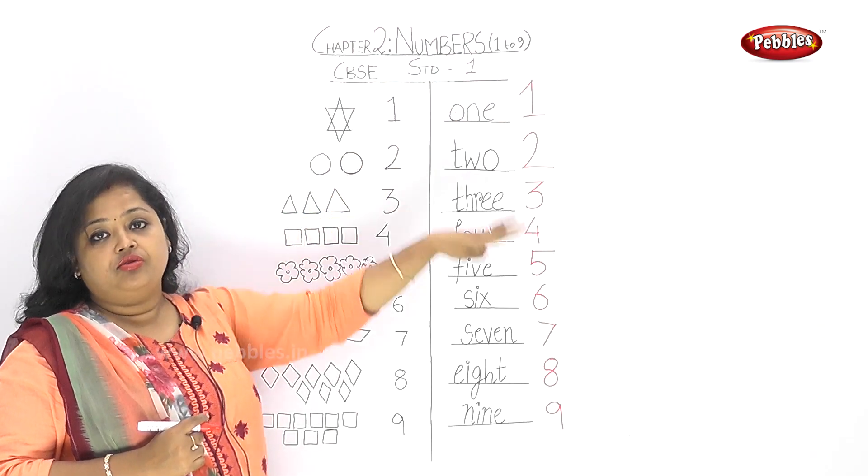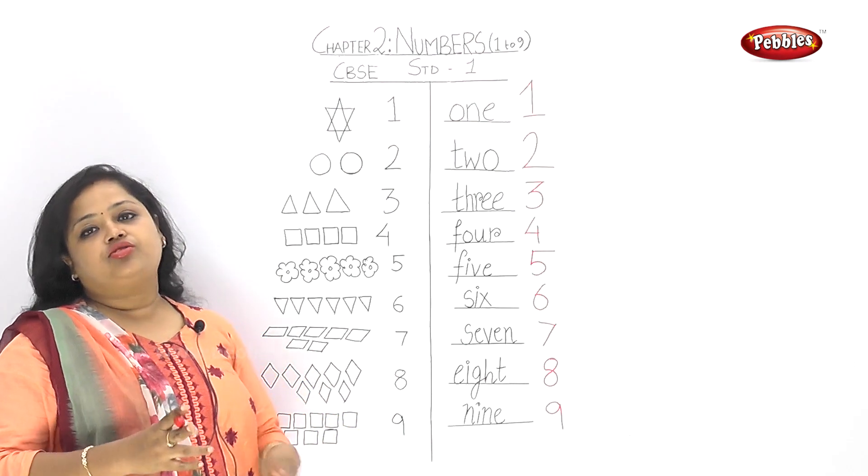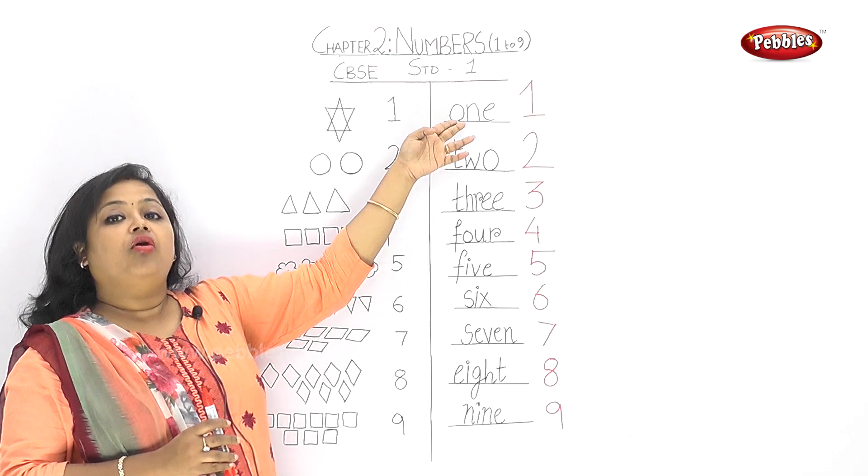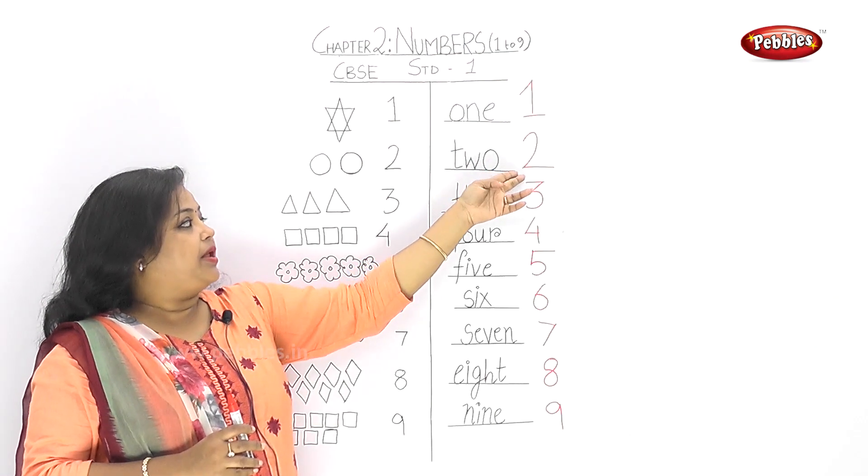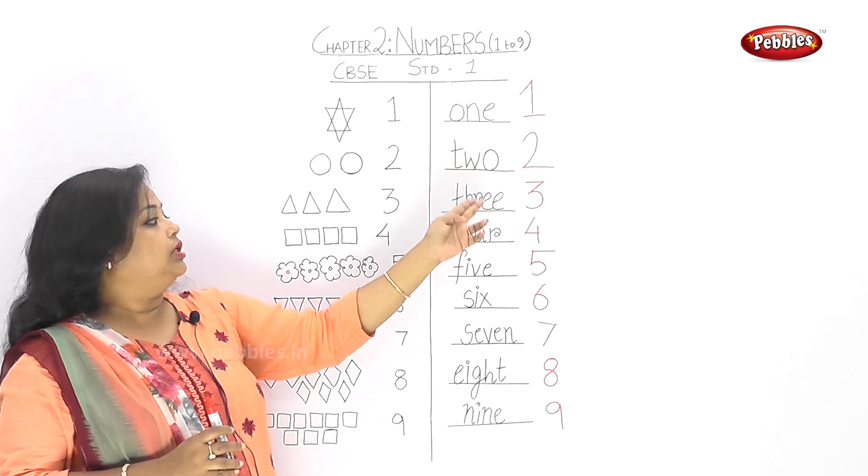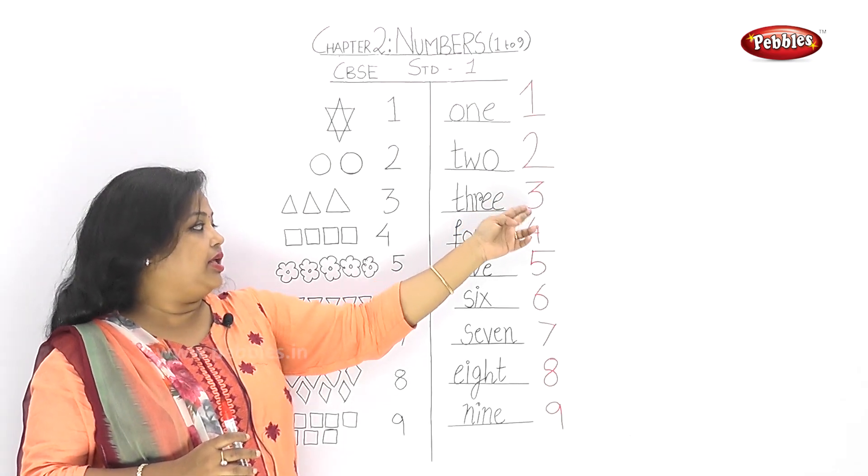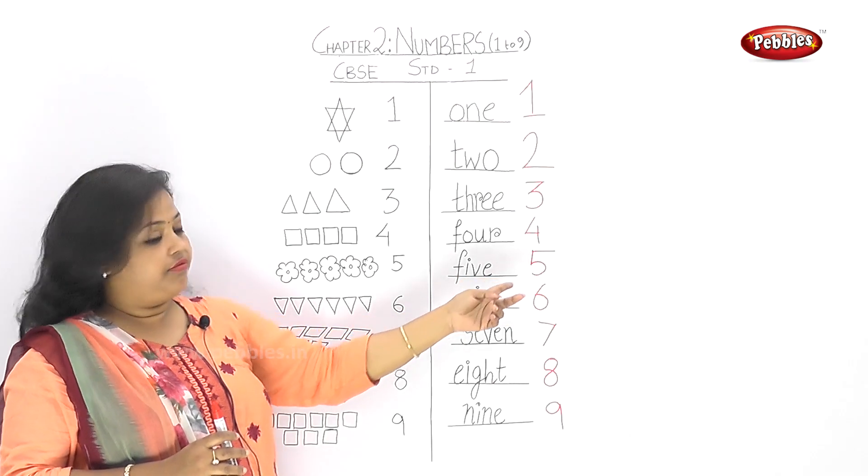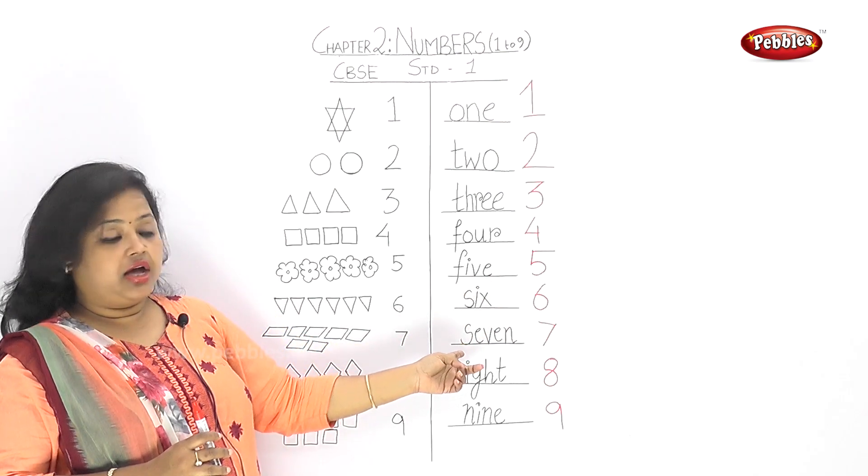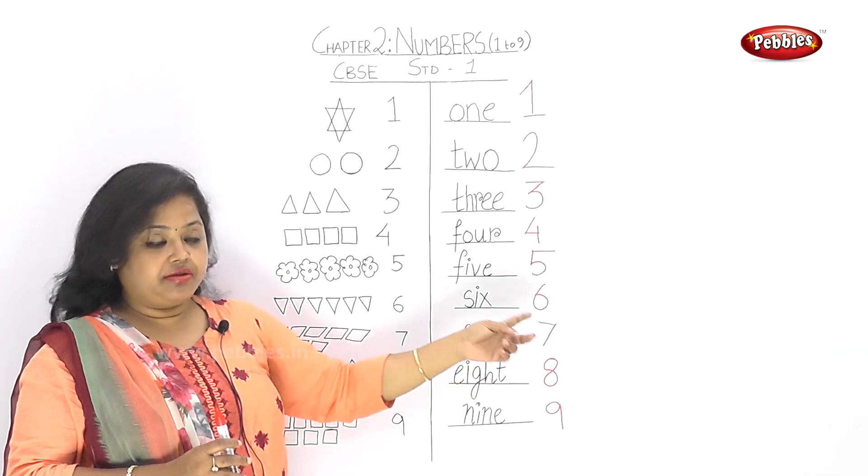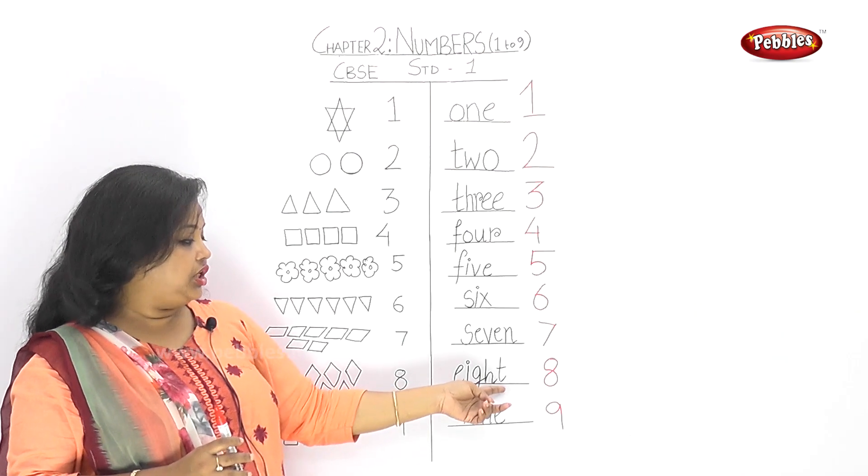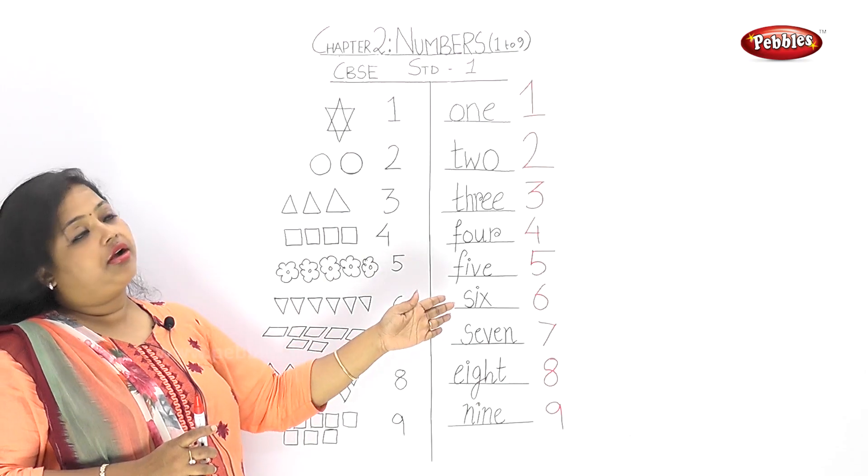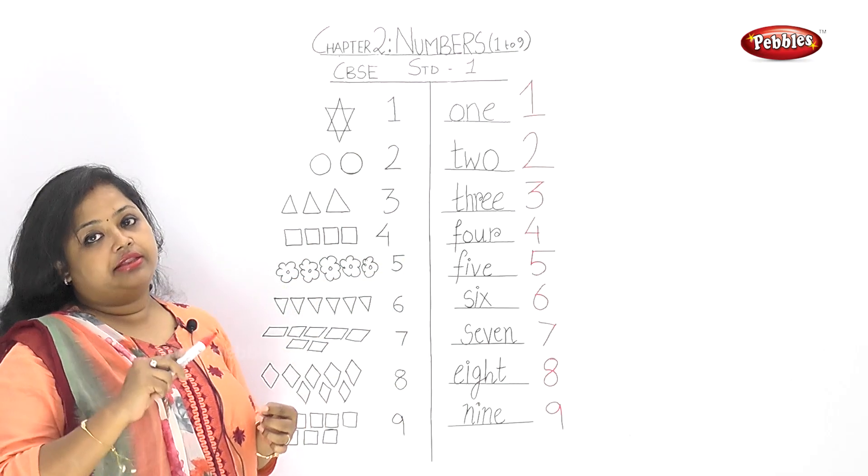So we have learned the numbers from 1 to 9. Let's do a revision now. Tell me the spellings. Let's say the spellings together. O-N-E, 1. T-W-O, 2. T-H-R-E-E, 3. F-O-U-R, 4. F-I-V-E, 5. S-I-X, 6. S-E-V-E-N, 7. E-I-G-H-T, 8. N-I-N-E, 9. So you must read and learn all these spellings. Okay?